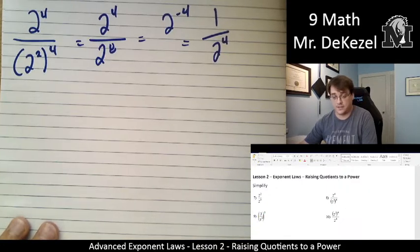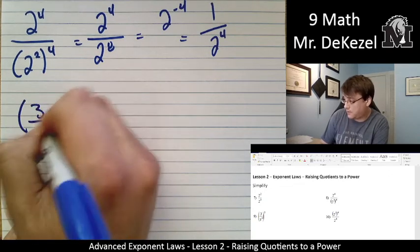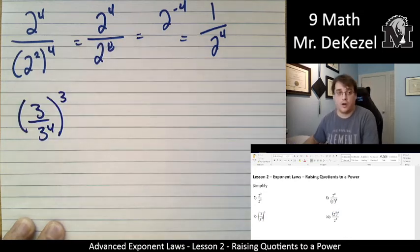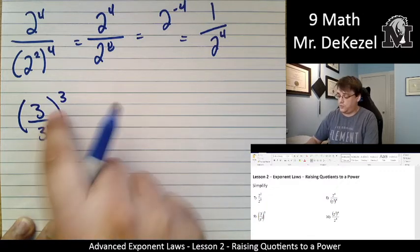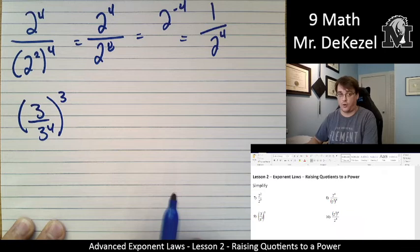I guess I can leave this one on the screen. All right, we have 3 over 3 to the power of 4, all to the power of 3. Let's do the subtraction first, and then we can do the exponent of the whole thing. There are two different ways we could do it, but let's do it this way.